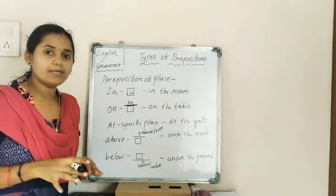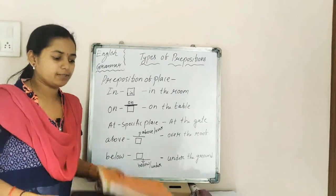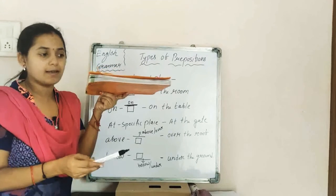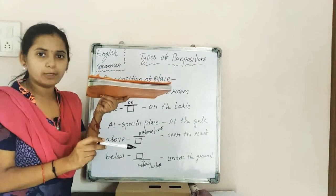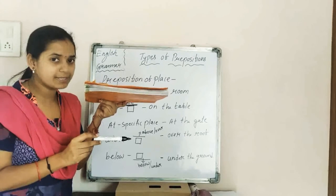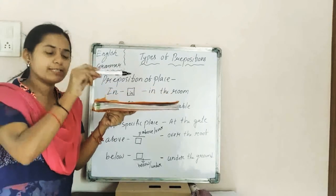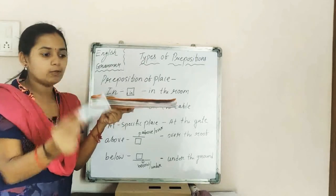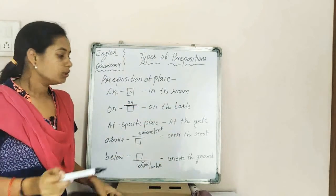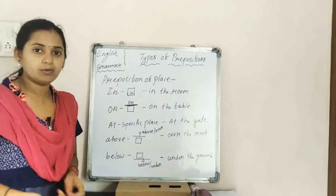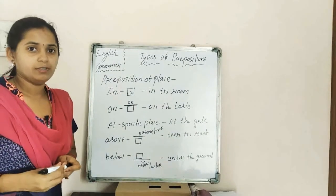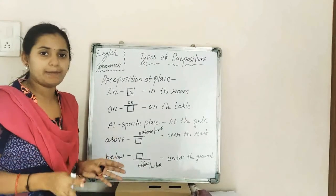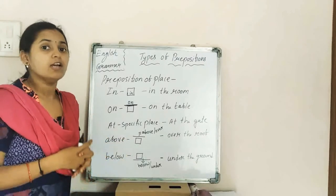Moving to 'below.' Below means under the surface. If anything is present below a surface, we say 'below' or 'under' — for example, the pen is below the book, or the cat is under the ground. Above means anything at any point above the surface; below or under means anything beneath it.